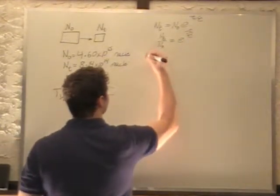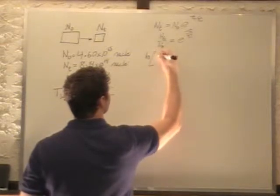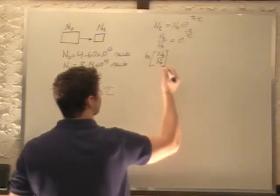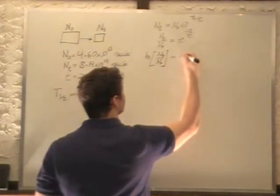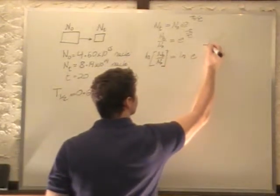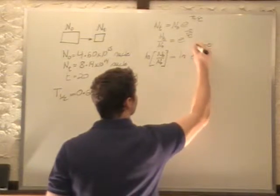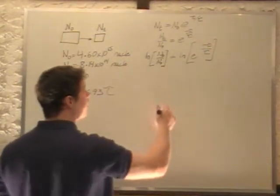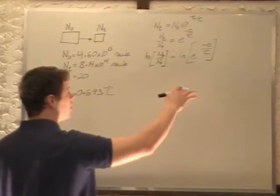So we take the natural log of both sides. We have ln of nt over n0. Make sure you take the natural log of the whole side. Natural log of e to the minus t over tau. Natural log of e to the something is just that something.